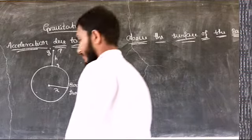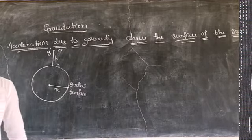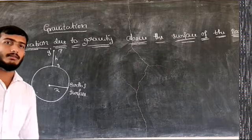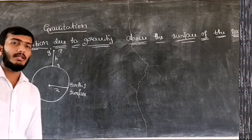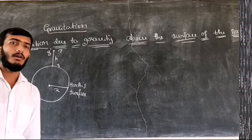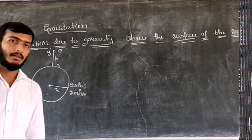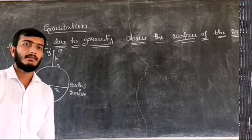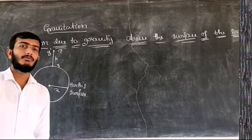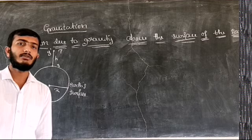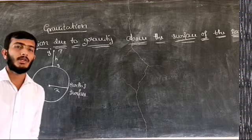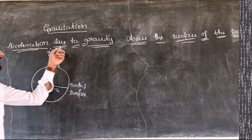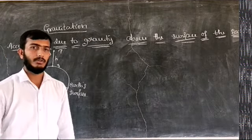Hello students. In last class we discussed some information about acceleration due to gravity on the surface of the Earth, and we got the final expression g is equal to GM divided by r square. Today we are going to discuss the concept of acceleration due to gravity above the surface of the Earth.